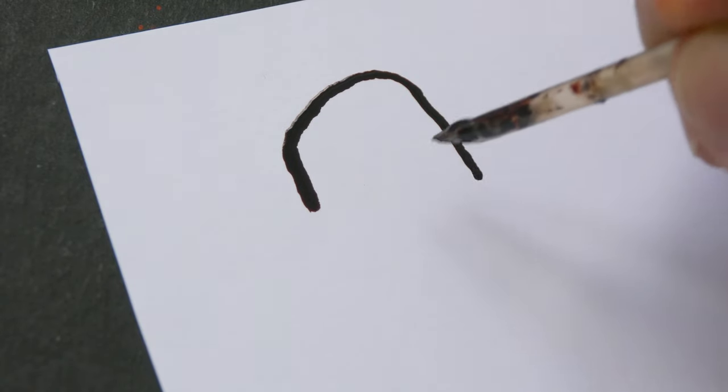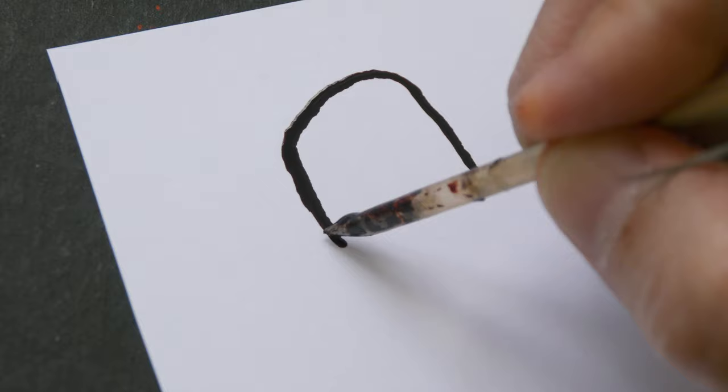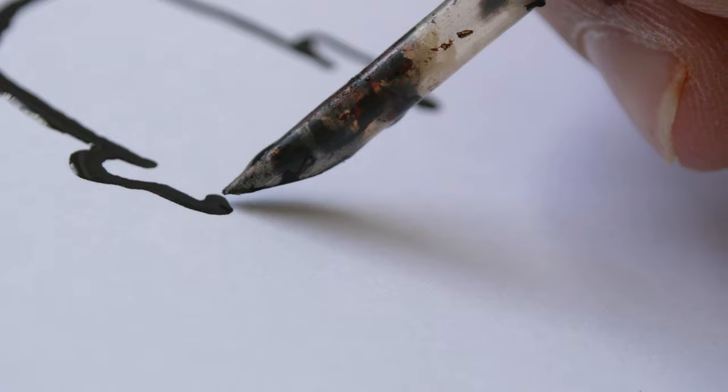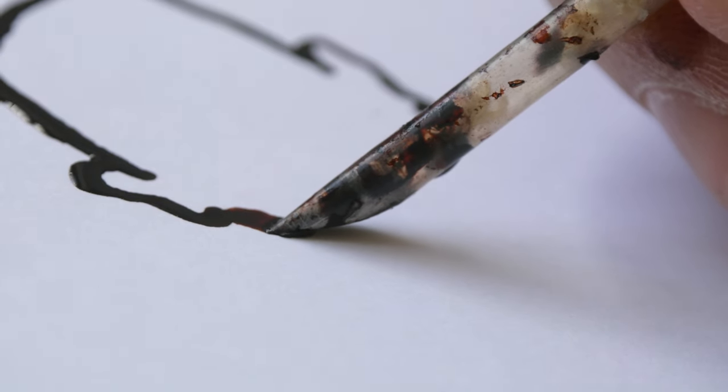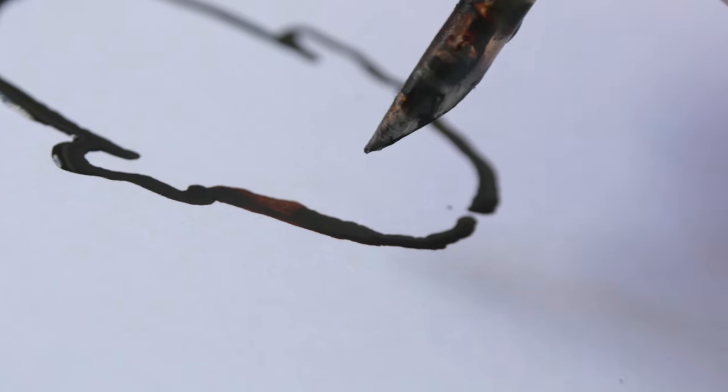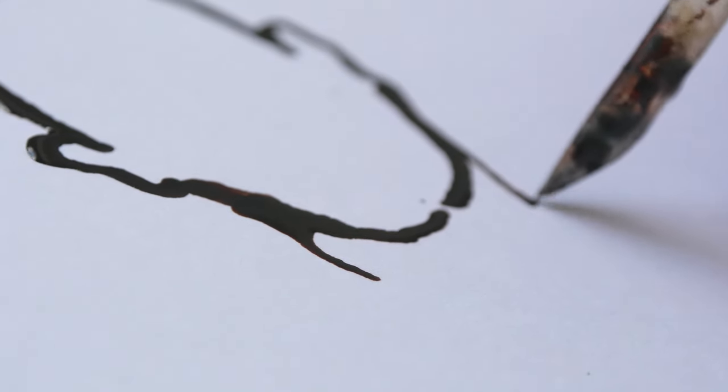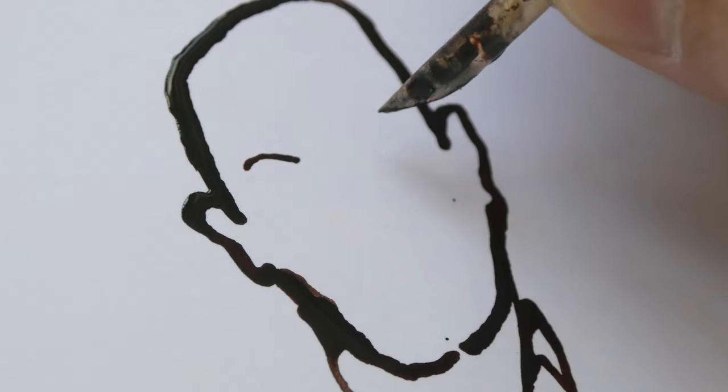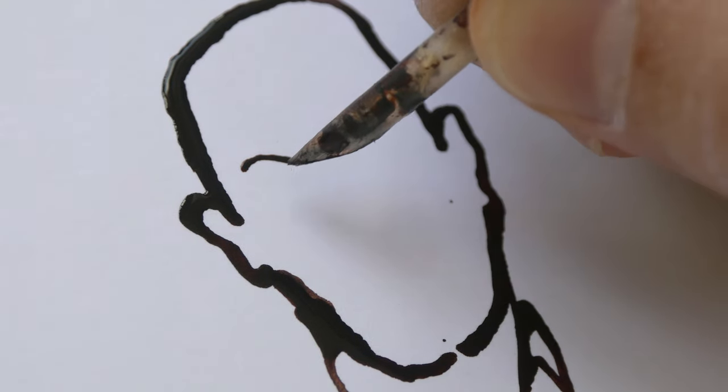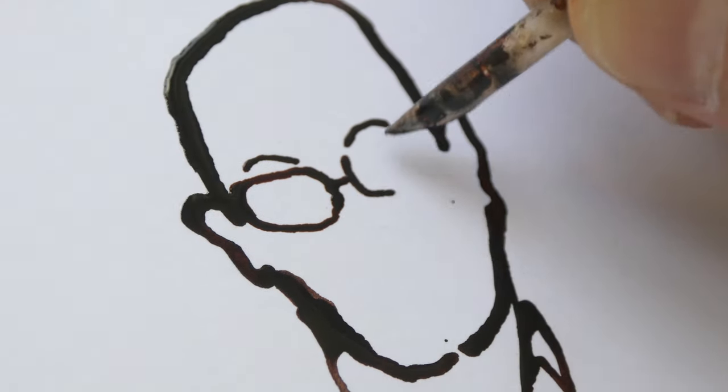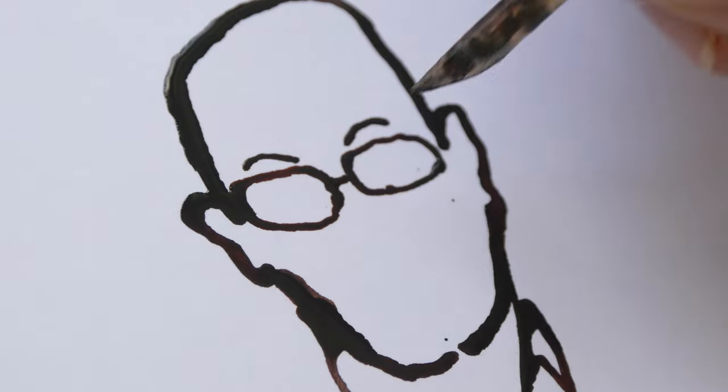All right, the ink flow is very good, maybe too good. The reason is probably because I'm drawing with that broad area of the cut. So if I were to draw with this feather a bit more vertically I can get thinner lines. So I do have to draw with the feather more vertically to control the lines.